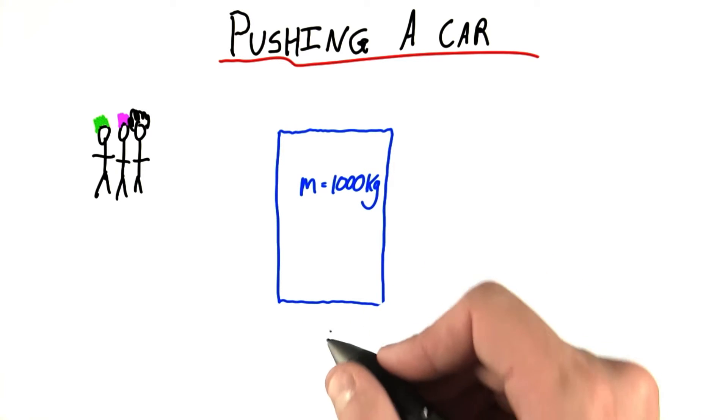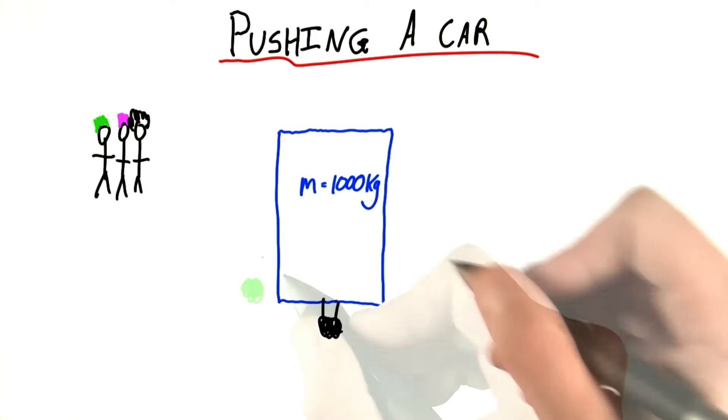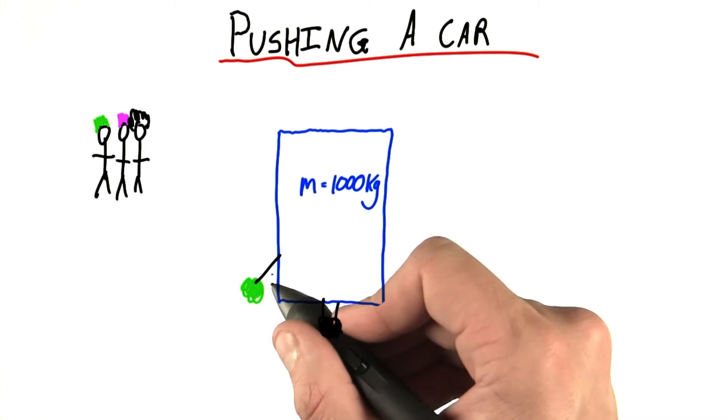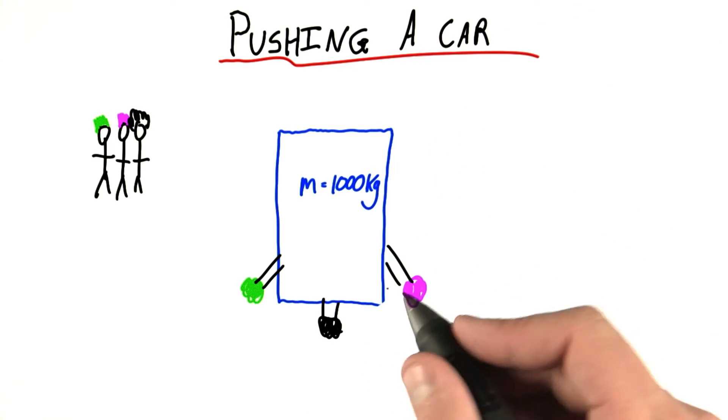Einstein is pushing from directly behind. Here's the top of Einstein's head and his arms. The green haired doctor is pushing from the side at a small angle. The purple haired doctor is pushing from the other side, also at a small angle.